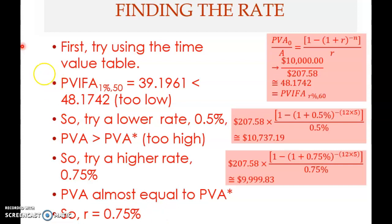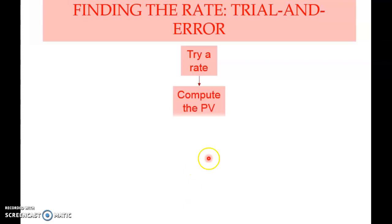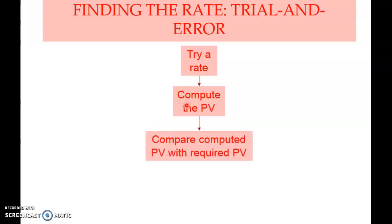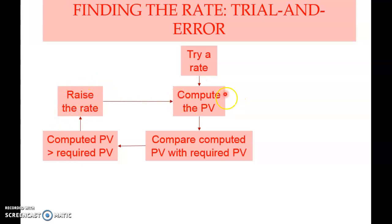Let's summarize the steps for finding the rate using the trial and error method. First, try a rate — this can be informed by using the time value table, but you can try any rate. Then compute the present value of that annuity and compare it with the required present value. If the computed present value is greater than required, you have used a lower rate, so try a higher rate.